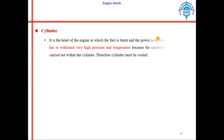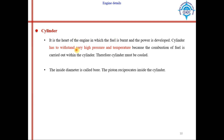The first component is the cylinder. The cylinder is basically the heart of the engine, in which fuel is burnt and power is developed. The cylinder has to withstand very high pressure and temperature because combustion of fuel is carried out within it. Therefore, the cylinder must be cooled — in bikes it is cooled with air, and in heavy automobiles it is cooled with water.